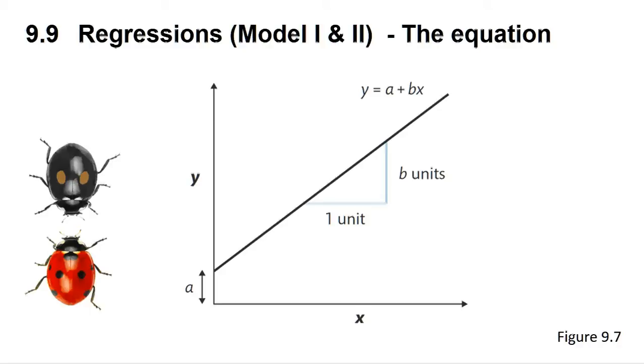Regressions are done when you have a significant correlation between two variables and wish to derive an equation that allows you to forecast the value of one variable when you know the value of the other. Regressions on their own do not tell you if there is a correlation between the variables you are modelling. See Section 9.5 in the book for further information.